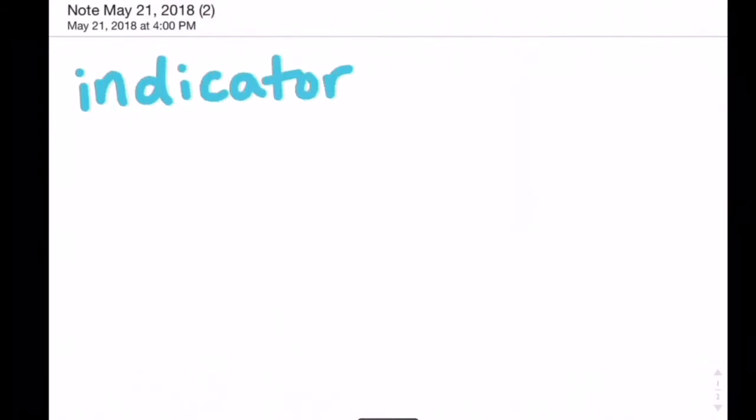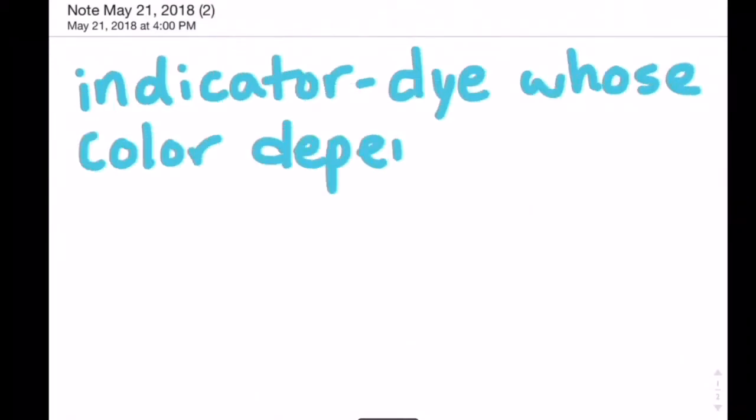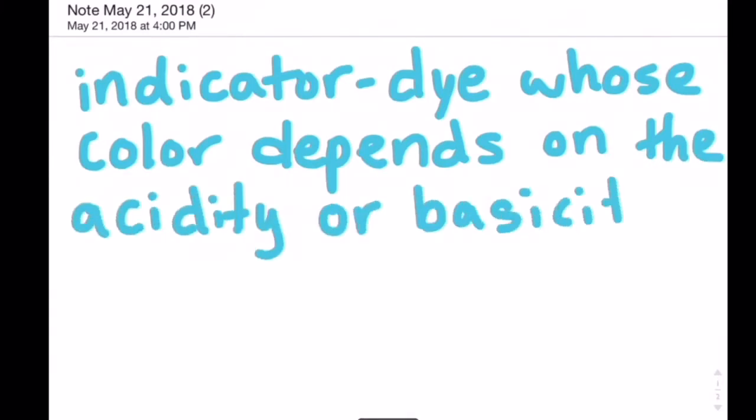An indicator is a dye whose color depends on the acidity or basicity of a solution. It itself is a weak organic acid that is a different color than its conjugate base.